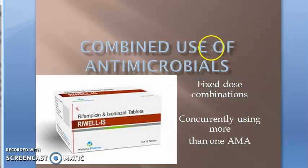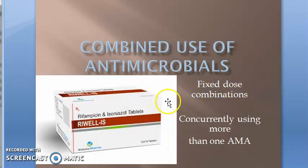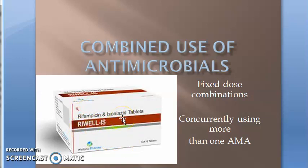Welcome. This topic is the combined use of antimicrobials — an important topic that has been asked three times. It can also be called fixed dose combinations of antimicrobial agents. Combination means one or more antimicrobial agents being given concurrently. For example, rifampicin and isoniazid being given together, probably for tuberculosis.